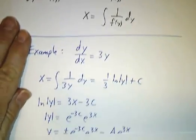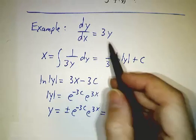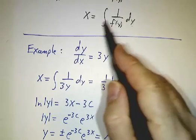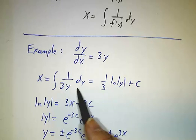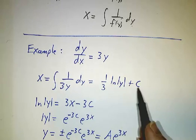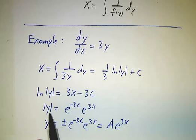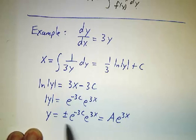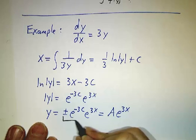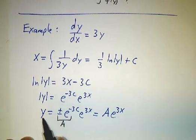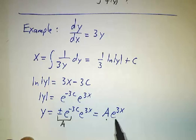So for example, if you had dy/dx was 3y, well then dx/dy is 1 over 3y. And x is the integral of 1 over 3y dy. Well that's 1/3 the natural log of absolute value of y plus a constant. So natural log of y is 3x minus 3 times our constant. Exponentiate both sides, absolute value of y is e to the minus 3c times e to the 3x. And y is plus or minus that. And we'll define a new arbitrary constant, we'll call it a, plus or minus e to the minus 3c we'll call a. And we get that our solution is y equals an arbitrary constant times e to the 3x.